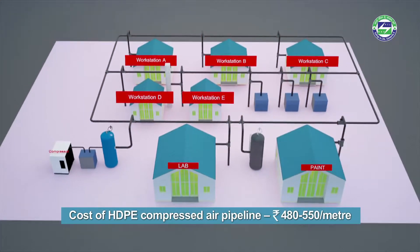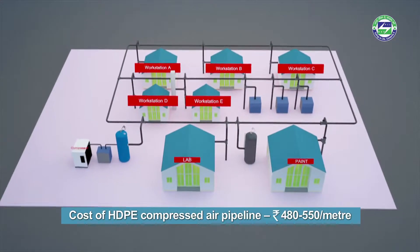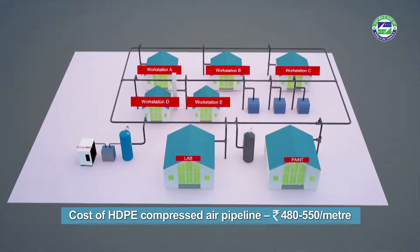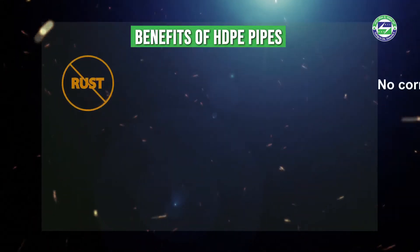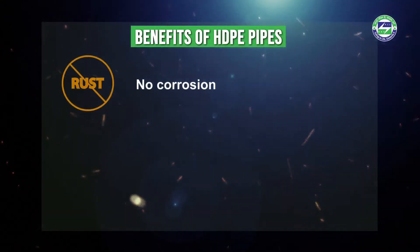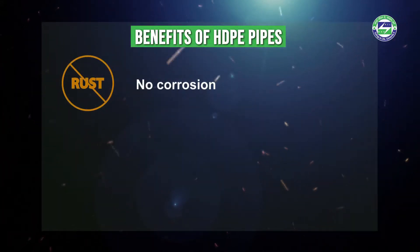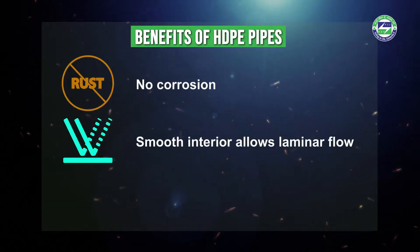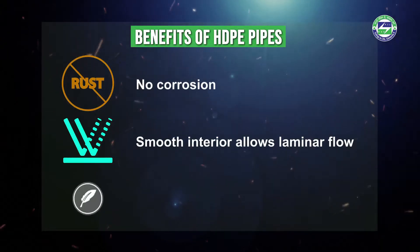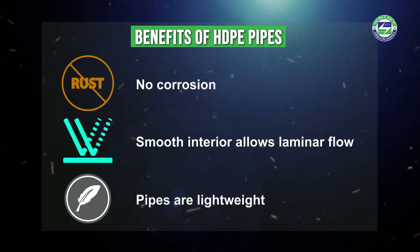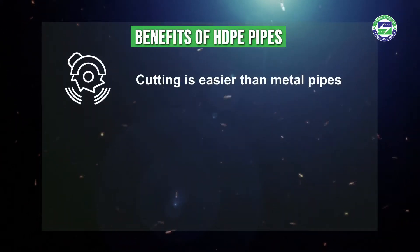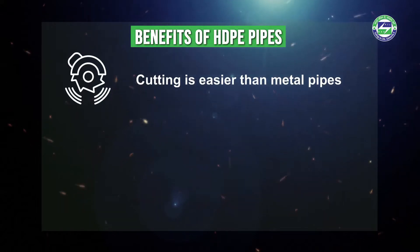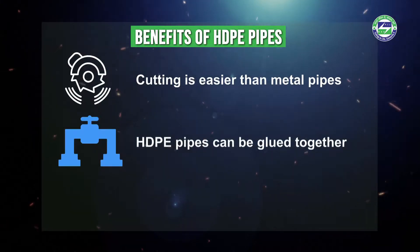The cost of installation of HDPE compressed air pipeline ranges from 480 to 550 rupees per meter. The benefits of HDPE pipes over conventional metal pipes include: no corrosion and hence no rust in air flow, smooth interior allowing laminar flow, lightweight construction for easy transport and fitting, easier cutting than metal pipes, and the ability to be glued together — which is less costly and quicker than welding metal.